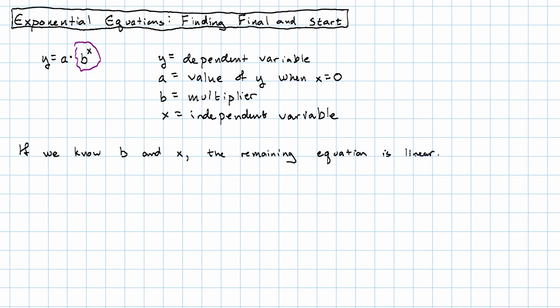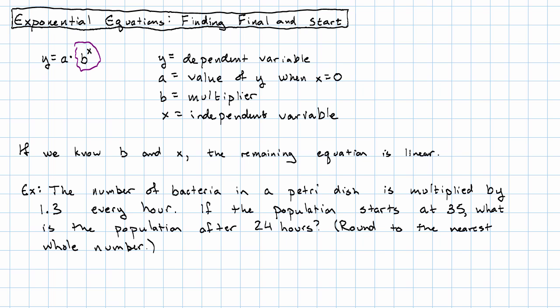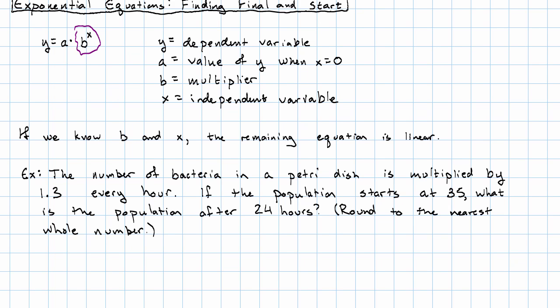The equation that we have left is just linear. For example, we might know that the number of bacteria in a Petri dish is multiplied by 1.3 every hour. If the population starts at 35, what's the population after 24 hours?